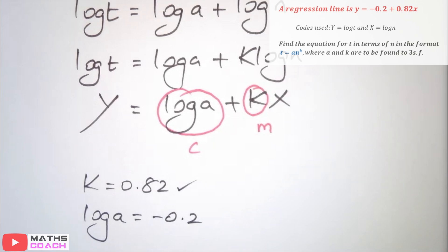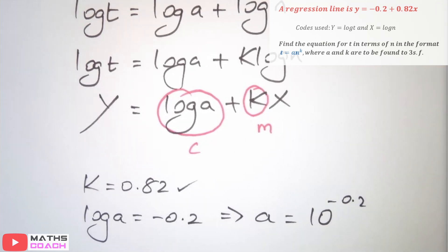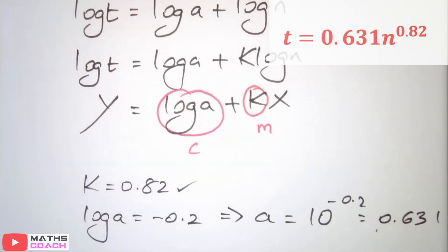So, log of a equals minus 0.2, so we can say, a, to undo that, would equal to 10 to the power minus 0.2. Now if you work that out, you happen to get 0.631. So, k remains as 0.82, so we have a function, t equals 8n to the power of k, and you end up with t equals 0.631n to the power of 0.82. Now that was an example based upon model 1.